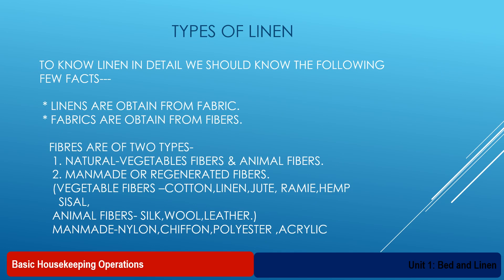Now let us discuss about types of linen. To know linen in detail, we should know the following few facts: number one, linens are obtained from fabric; number two, fabrics are obtained from fibers. Fibers are of two types: number one, natural fibers, and number two, man-made or regenerated fibers. Under natural fibers, we have two sub-categories: vegetable fibers and animal fibers. Vegetable fibers are obtained from different types of plants — for example, cotton, linen, jute, ramie, hemp, and sisal.